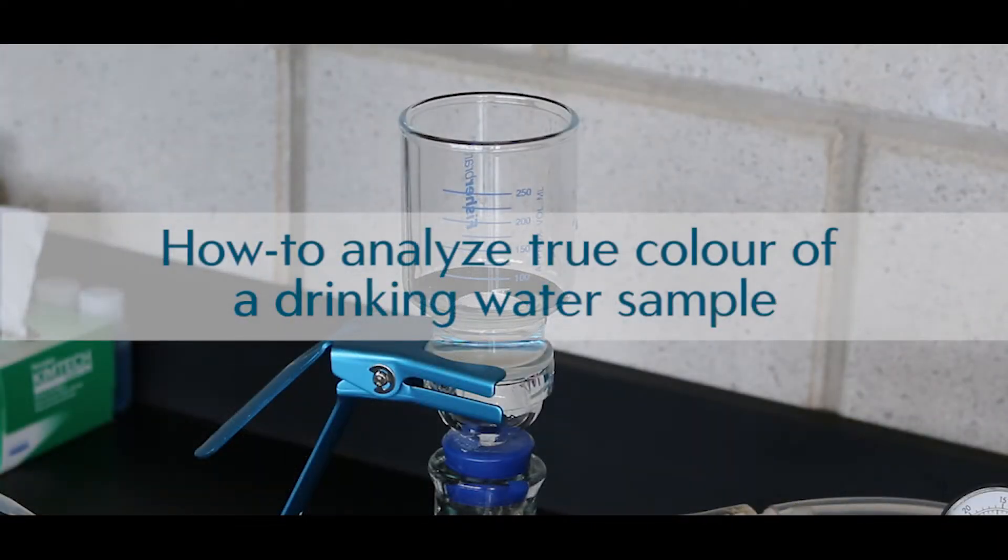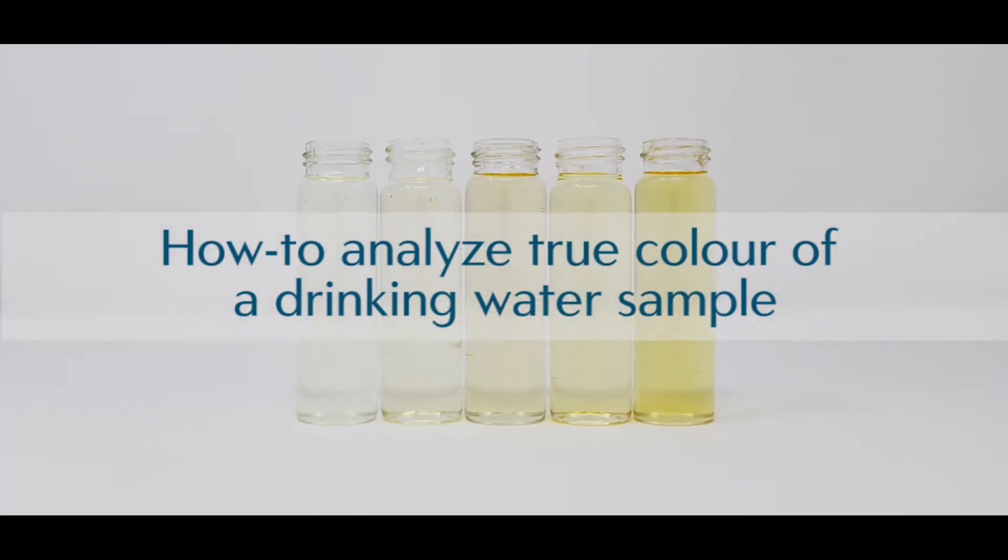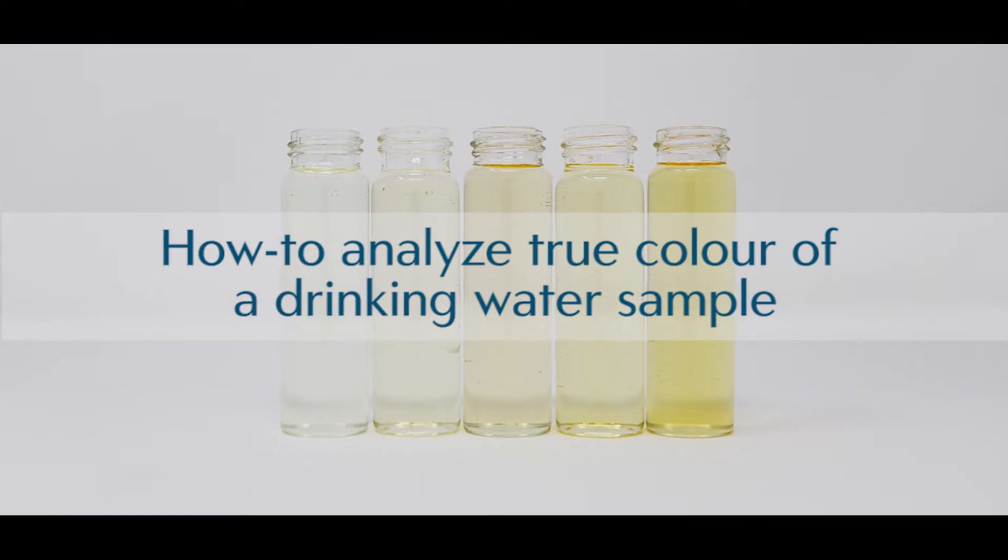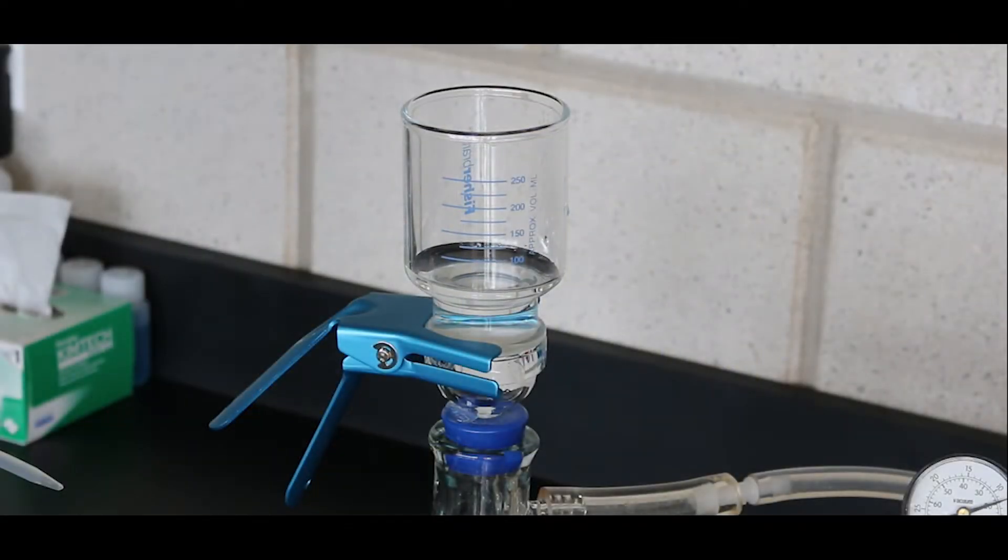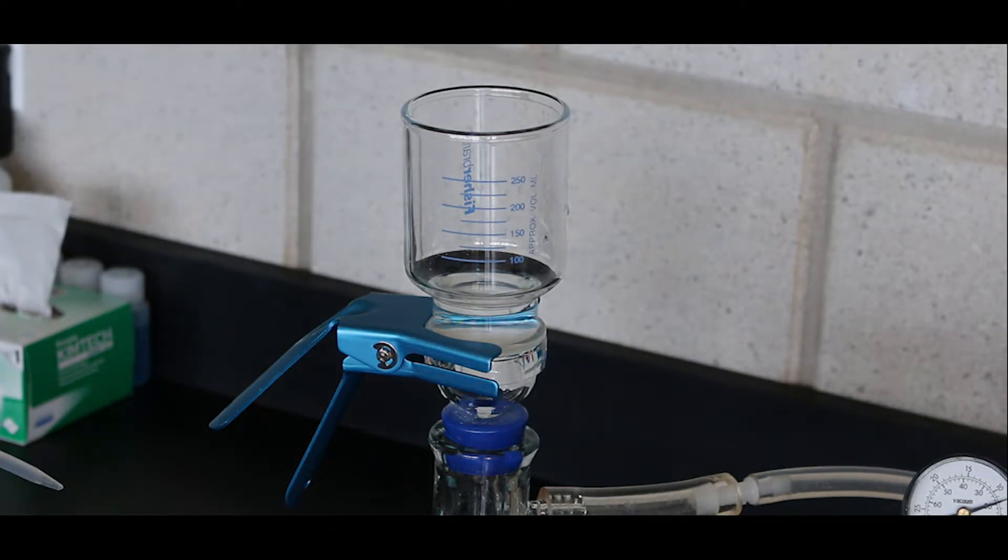This video will demonstrate how to properly analyze the true color of a water sample by the platinum-cobalt standard method. To measure true color, both the blank and sample waters need to be filtered first. Refer to method instructions or watch our video, How to Filter a Water Sample, for guidance.